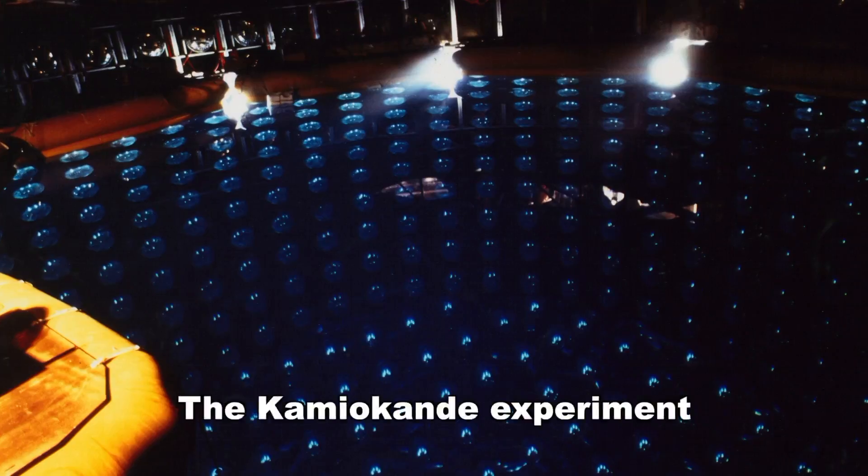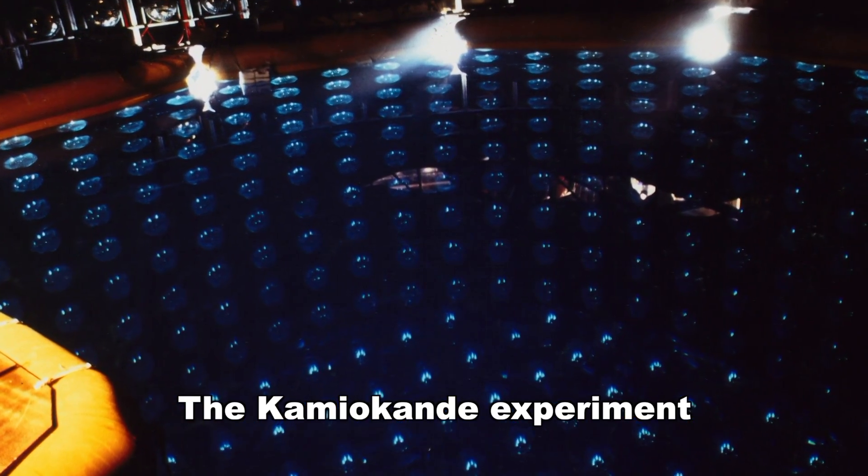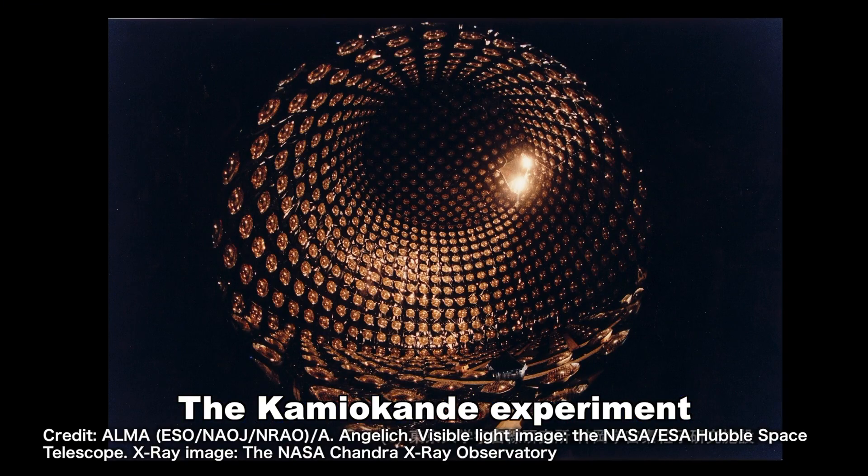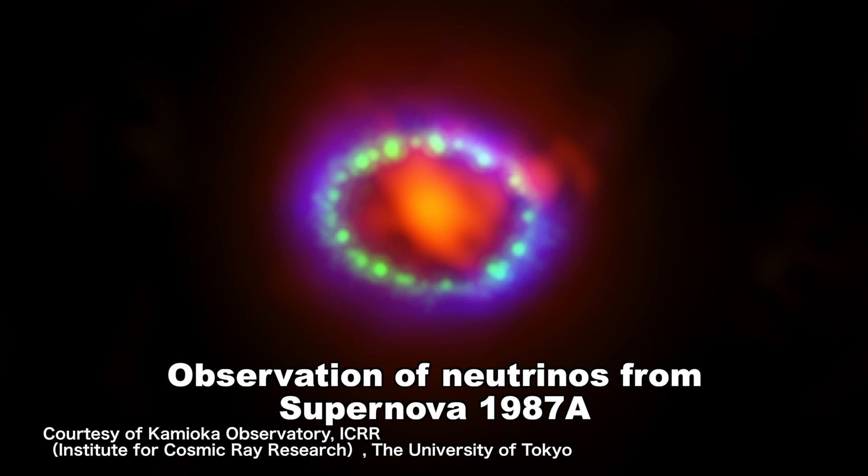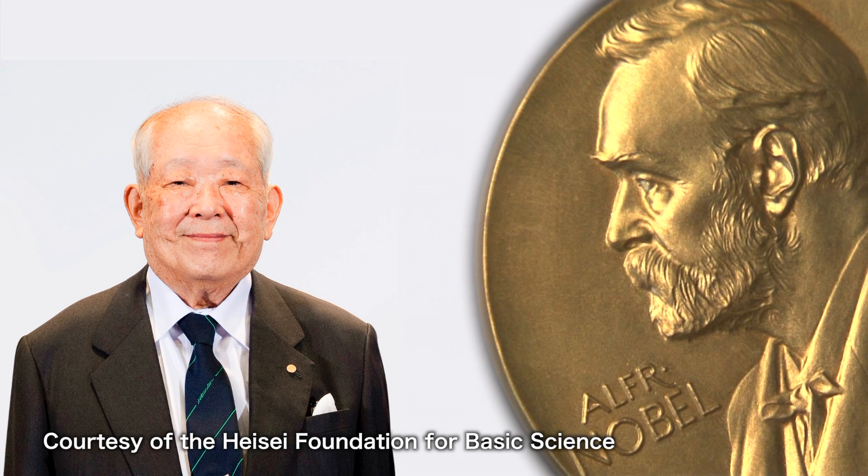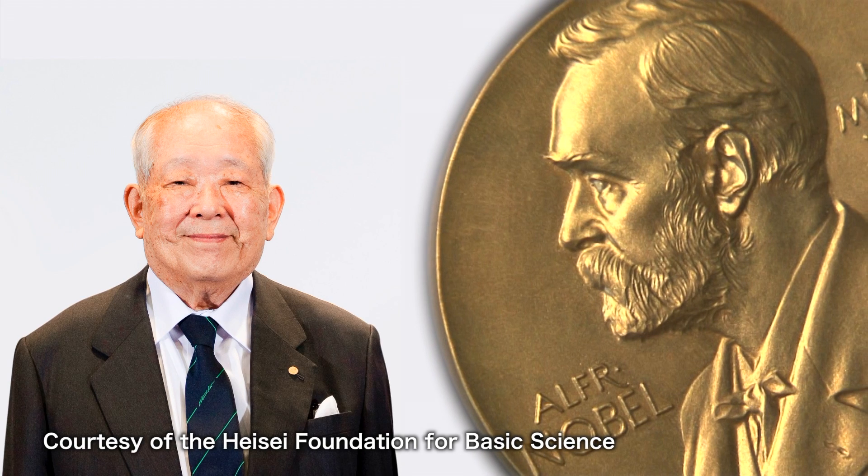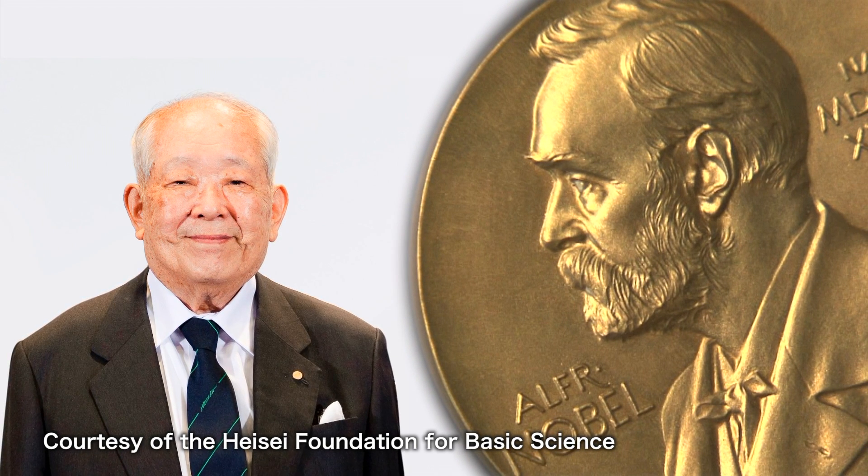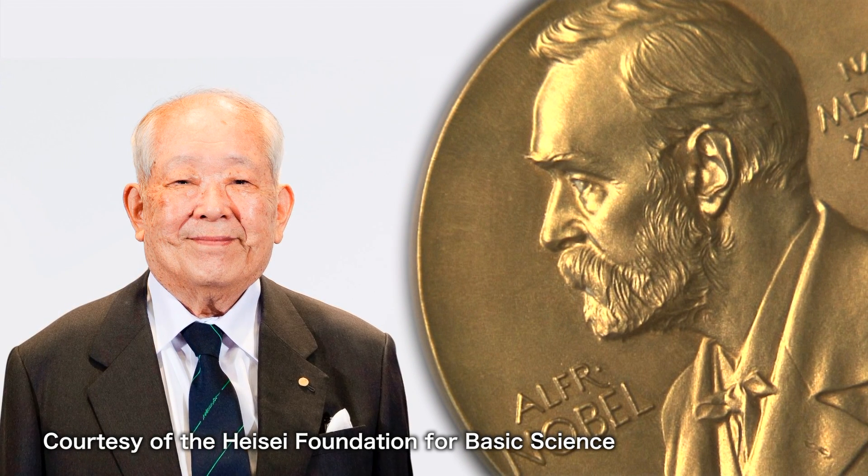In 1987, the Kamiokande experiment succeeded in observing neutrinos from supernova 1987A. Professor Masatoshi Koshiba, the leader of the experiment, won the Nobel Prize in Physics for this work in 2002.